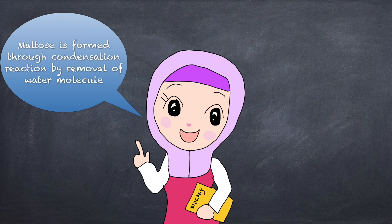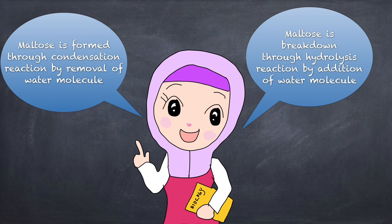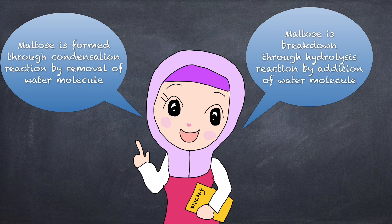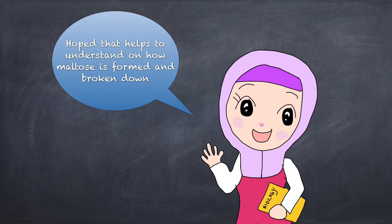So we now know that maltose is formed through condensation reaction by removal of water molecule and broken down through hydrolysis reaction by the addition of water molecule. Hope that helps to understand how maltose is formed and broken down.